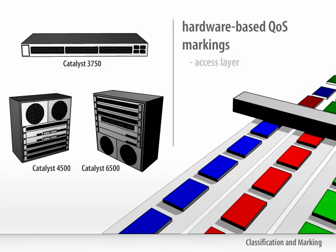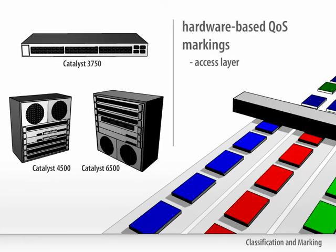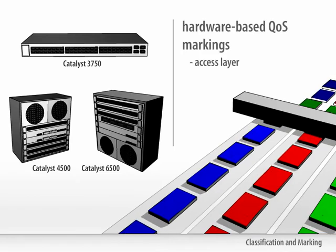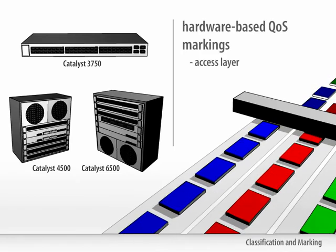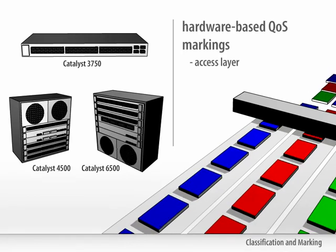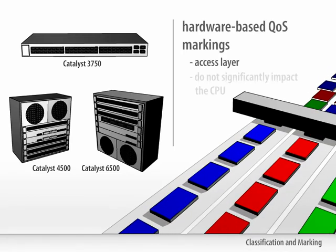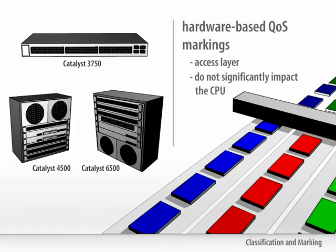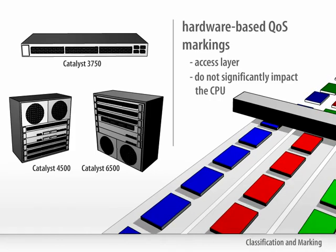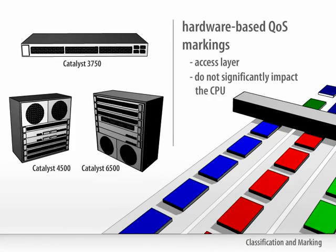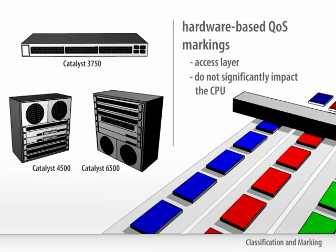The access layer is the best place to enforce marking to ensure packets receive proper treatment throughout the network. These hardware-based QoS mechanisms also do not significantly impact the CPU load on the switch.